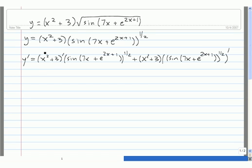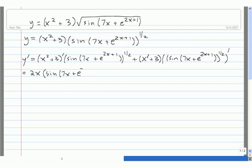We'll start with the first derivative here — the derivative of x squared plus 3. Using the simple power rule, the derivative of x squared is 2x, and the derivative of 3 is just 0. So we have 2x times this function, then add on x squared plus 3 times the derivative of the second function.